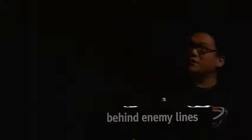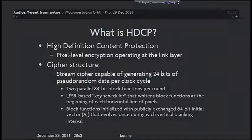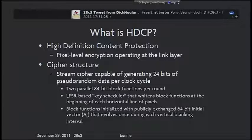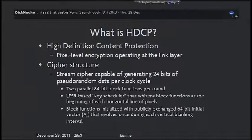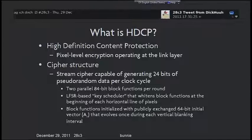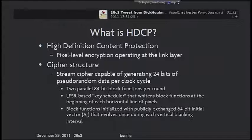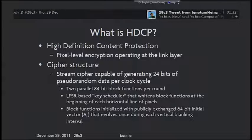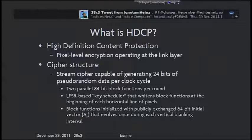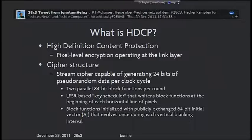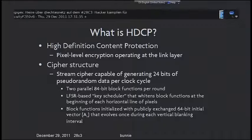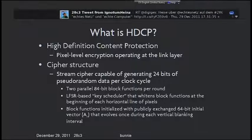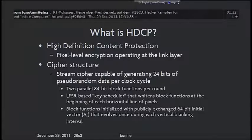First, what is HDCP? It's the High-bandwidth Digital Content Protection. It's a pixel-level encryption operating on the link layer. The cipher structure is a stream cipher that generates 24 bits of pseudo-random data per cycle. Internally, it has a structure of a pair of block functions that run once per clock cycle. There's an LFSR-based key scheduler that whitens the block functions at the beginning of every horizontal retrace. The block functions are initialized with a 64-bit initial vector that also evolves during vertical blanking intervals.